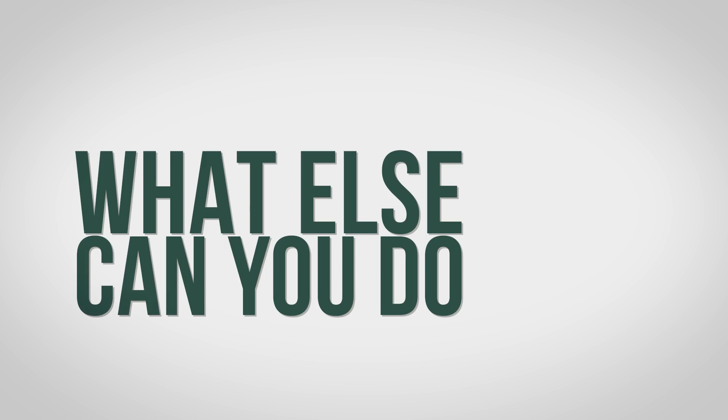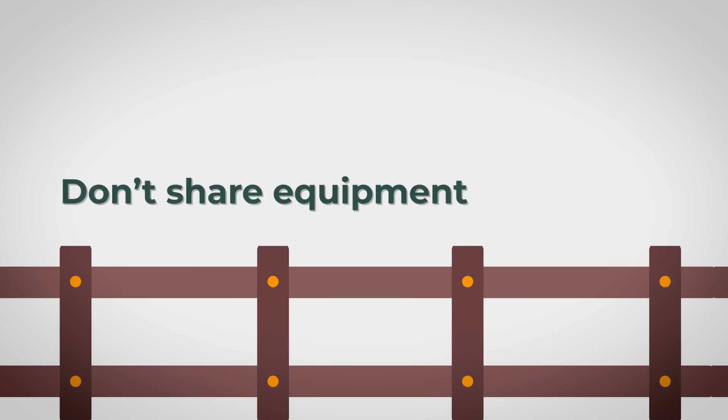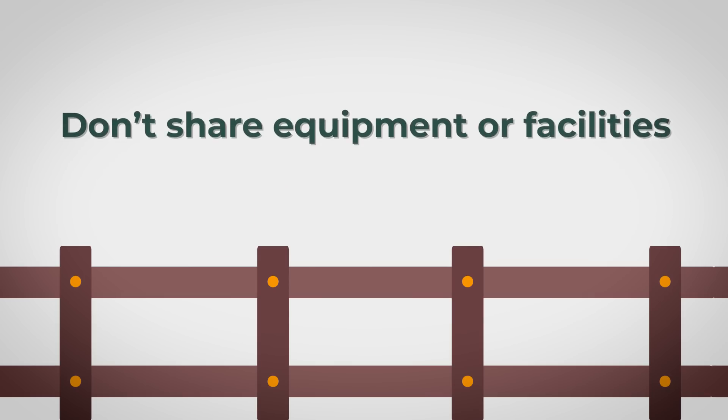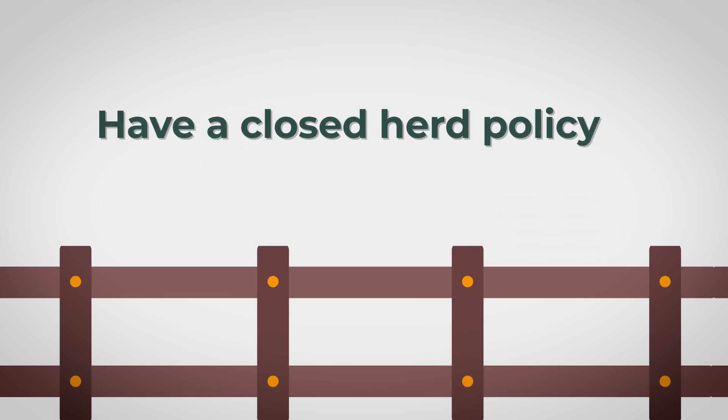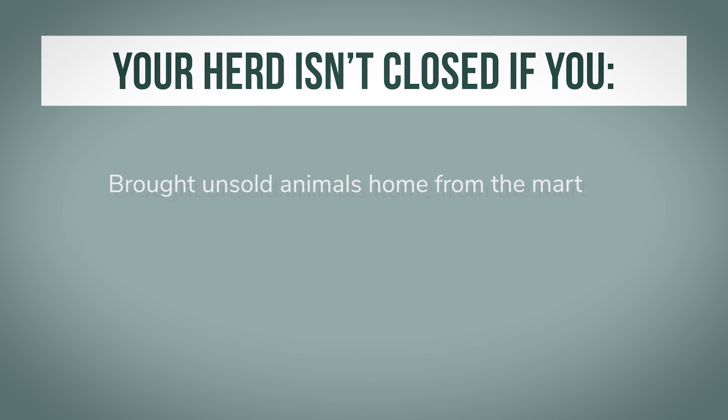What else can you do to prevent spread from animals in other herds? Make sure your boundary fences stop all contact with neighboring cattle. Don't share equipment or facilities. Have a closed herd policy. Is your herd really closed? Your herd isn't closed if you brought unsold animals home from the mart.